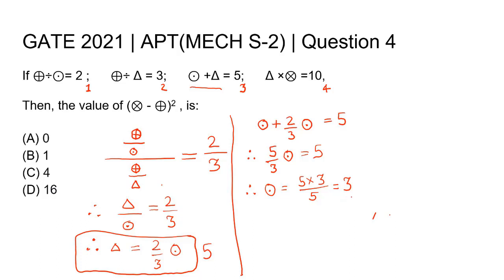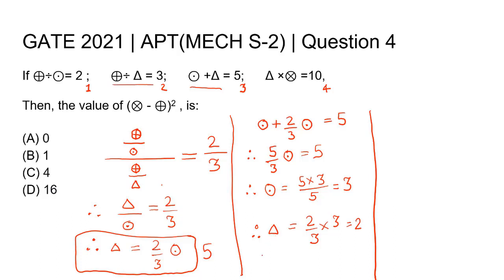Let's put this value into equation 5. Therefore, triangle equals 2/3 × 3, which equals 2. Now let's put the value of triangle into equation 2. So the value of circle-with-plus-sign equals 3 × triangle, which equals 6.